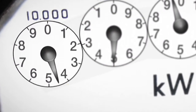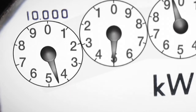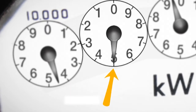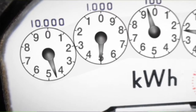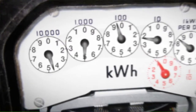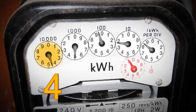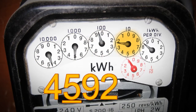If the pointer is anywhere between, say, 4 and 5, write down 4. If the pointer is directly over the figure, say 5, write down that figure and underline it: 5. The meter reading example shown will be 4, 5, 9, 2, 8.